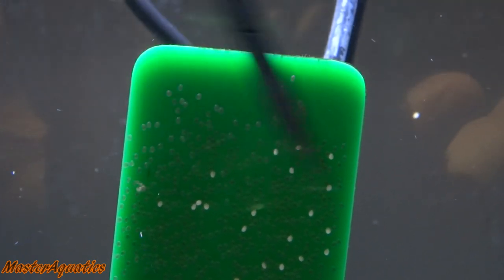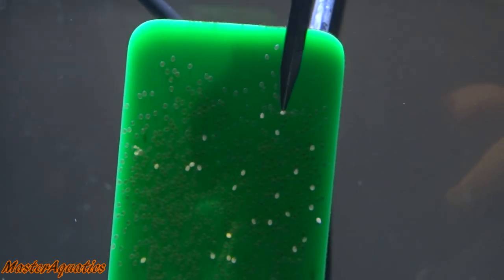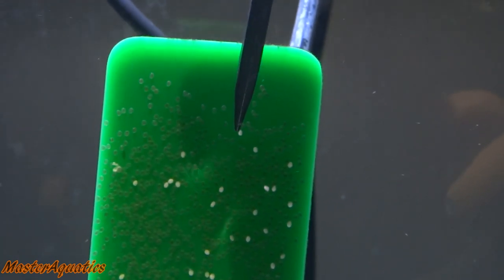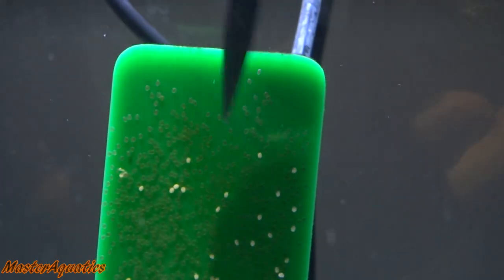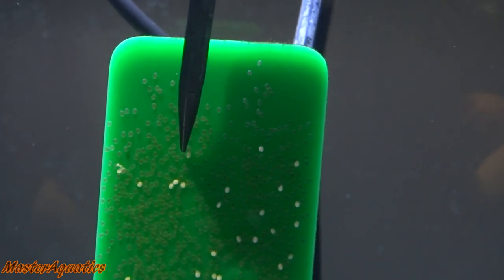Now, you can hatch the eggs on your own and remove the white eggs and have the perfect setup for hatching the eggs, but you're still going to get white eggs no matter what, even if you keep the water quality at pristine conditions. Because one, the male angelfish sometimes doesn't fertilize all the eggs.